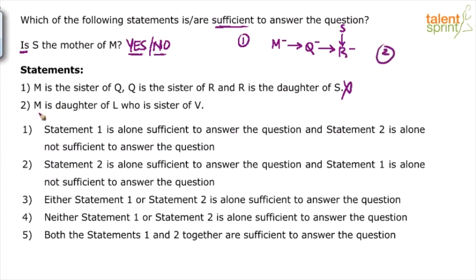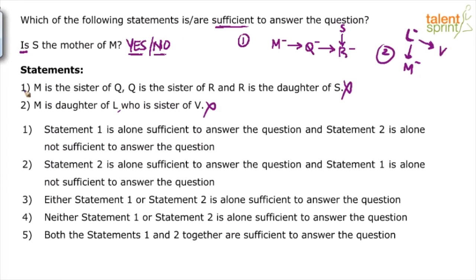Now look at statement 2. Statement 2 says M is the daughter of L, who is the sister of V. So M is the daughter of L, and L is the sister of V. Now if you look at statement 2, there is no mention of S at all.